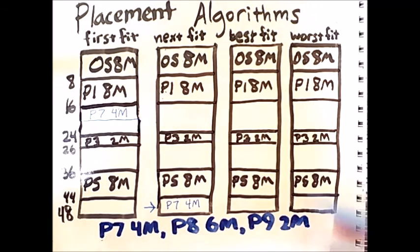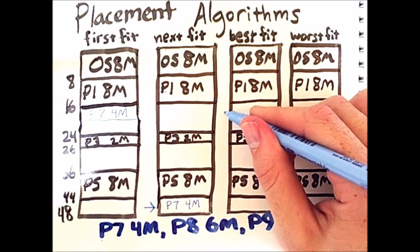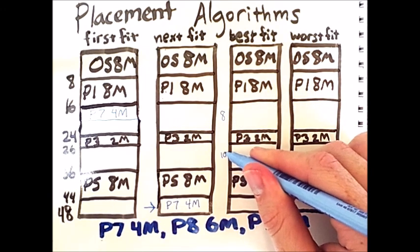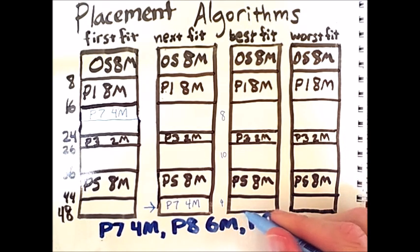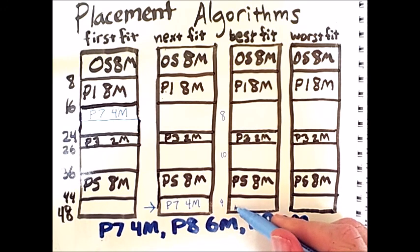Best fit scans all available slots, noting that there are 8 free megabytes here, and 10 free megabytes here, and 4 free megabytes here. So all of these slots can fit the 4 megabyte process, but if we subtract the 4 megabytes of process 7 from the empty space, we would be left with 0 remaining megabytes of memory here, so this is the best fit for process 7.